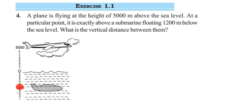This 1200 will be minus 1200 meters, and 5000 will be positive because it is above. If a value is below we take it as a negative integer; if it is above we take it as a positive integer. So the plane height will be 5000 and the submarine will be minus 1200.